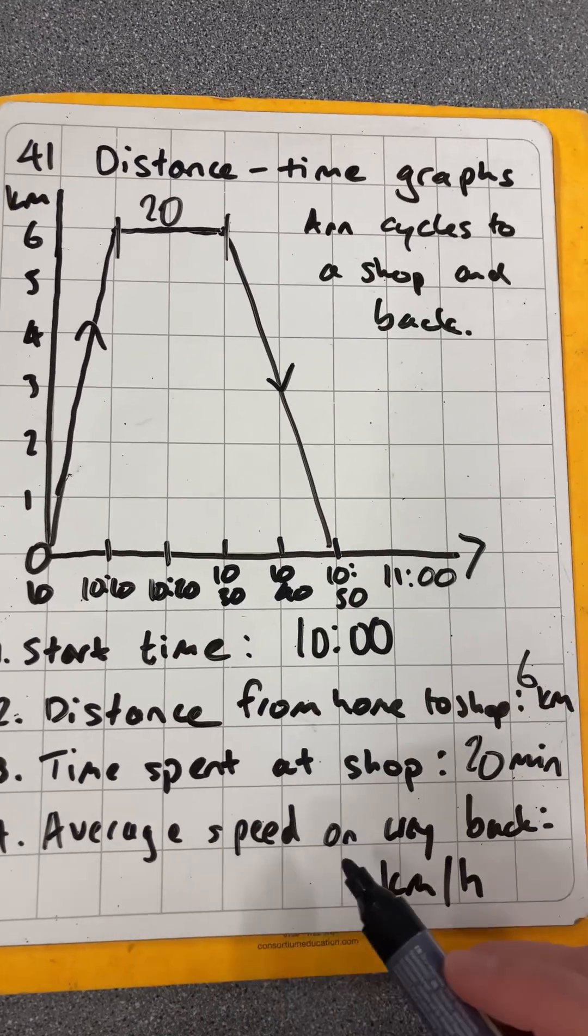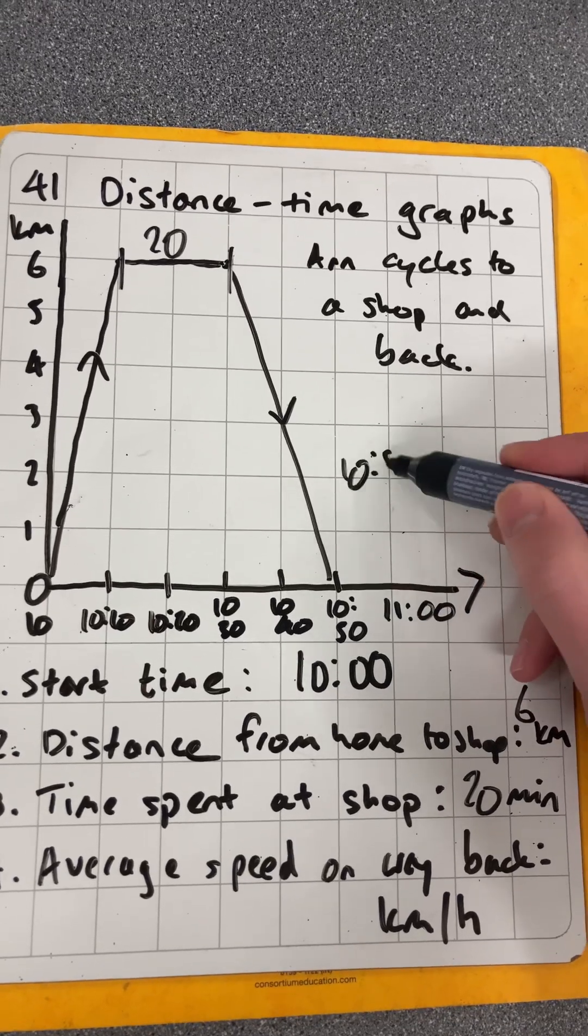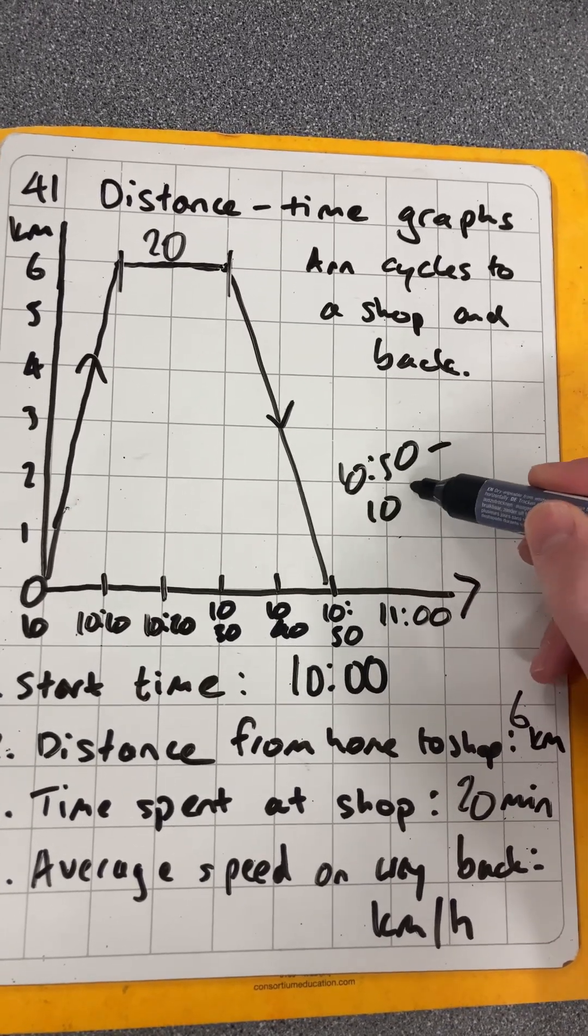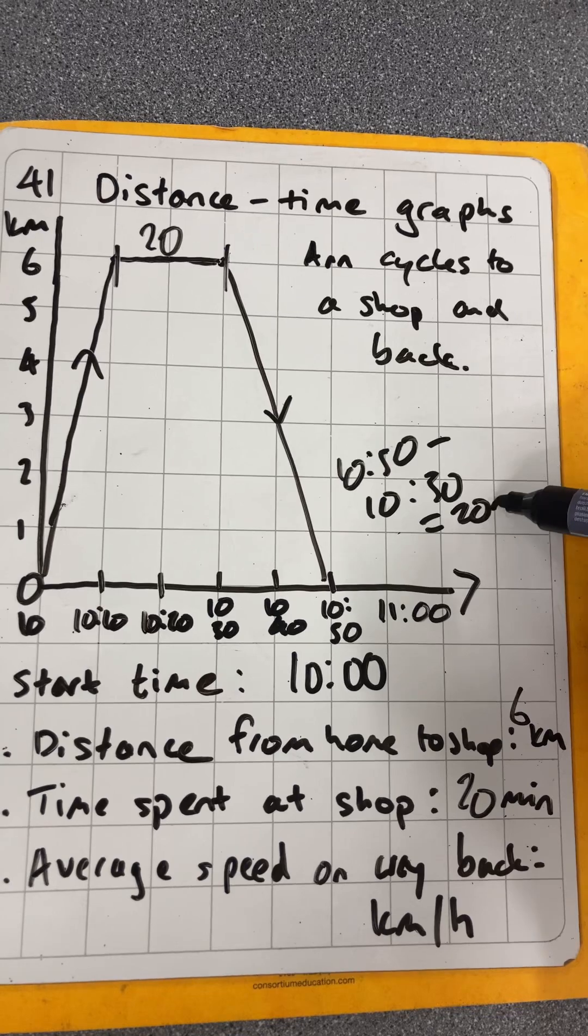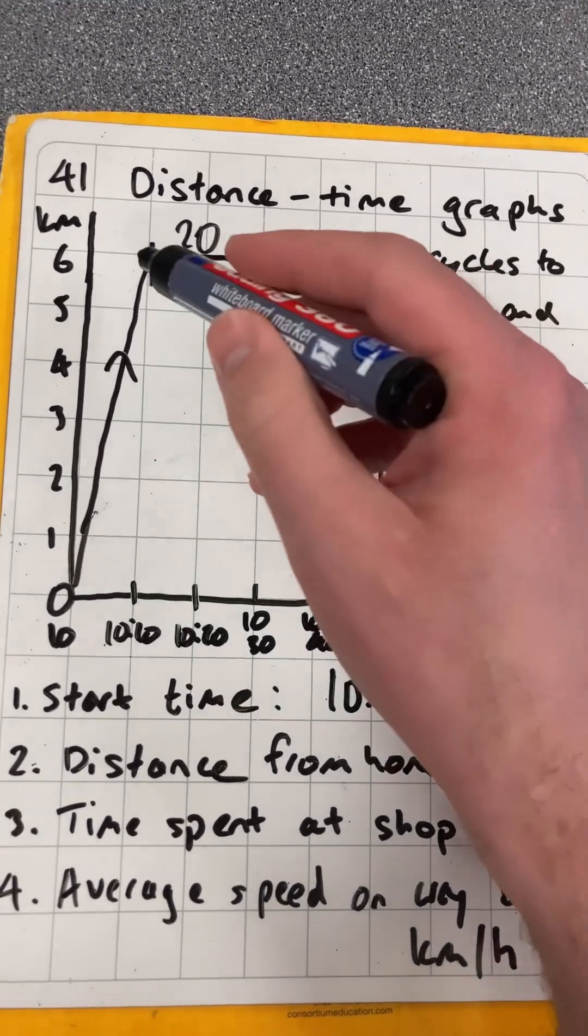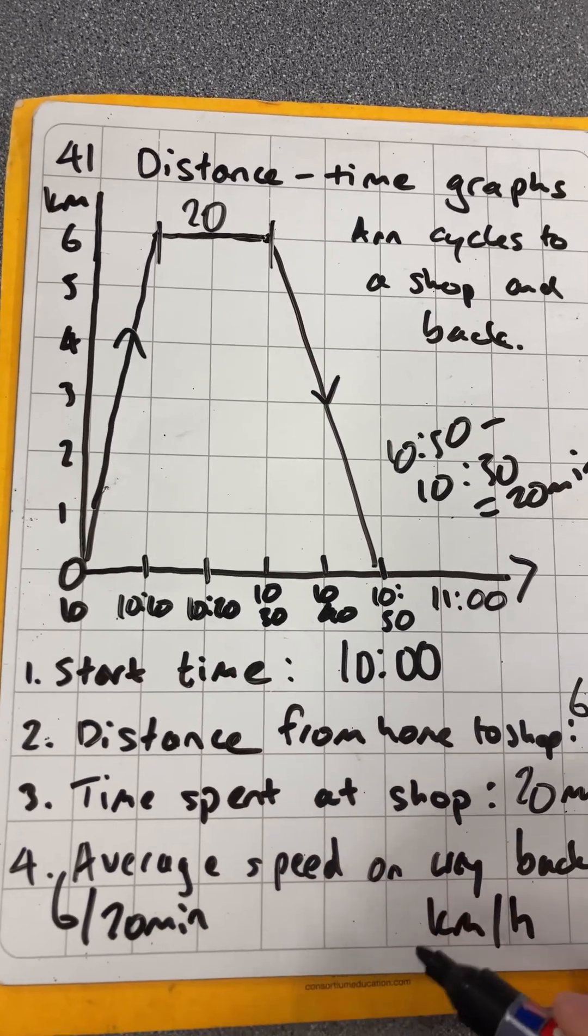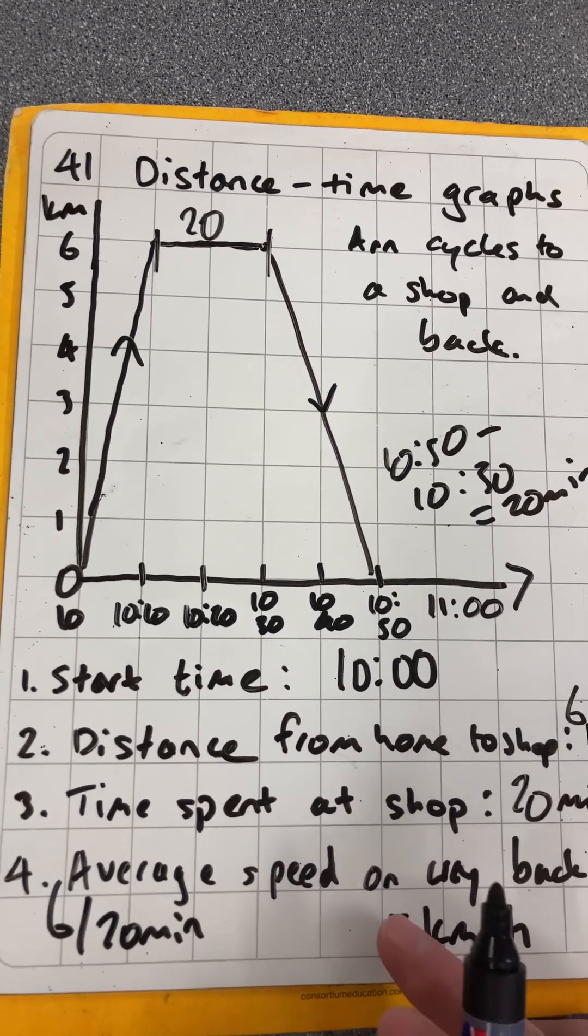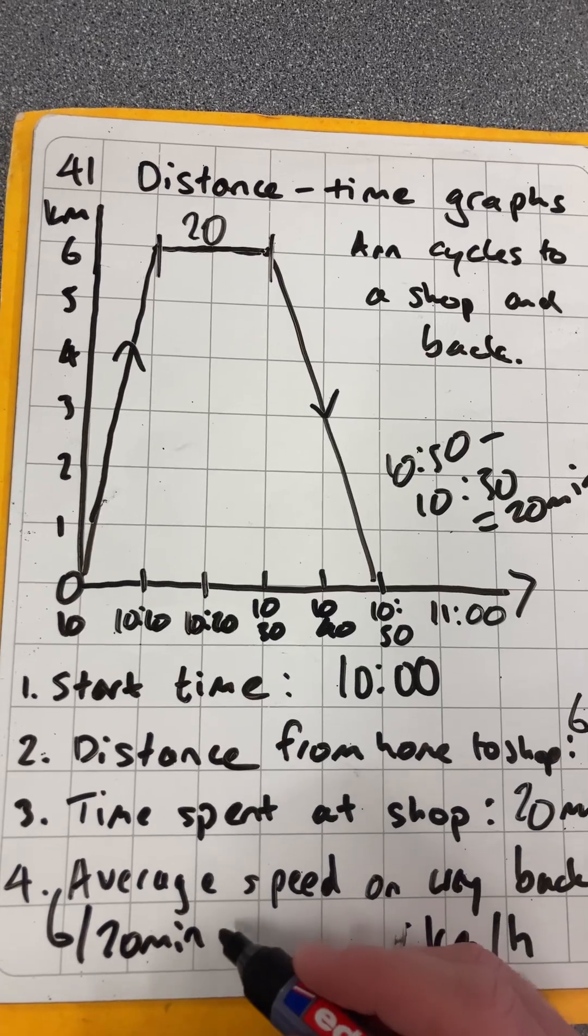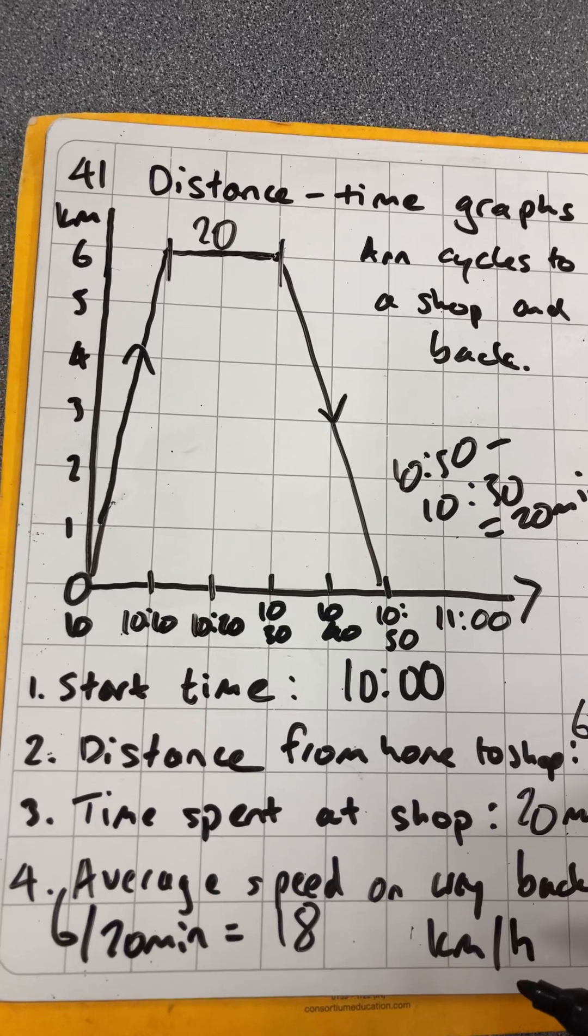Now the average speed on the way back. From 10:30 till 10:50 is a 20-minute journey. For kilometers per hour, it's 6 kilometers in 20 minutes, but I want kilometers per hour. 20 minutes is a third of an hour, so you multiply that by 3. It's 18 kilometers per hour.